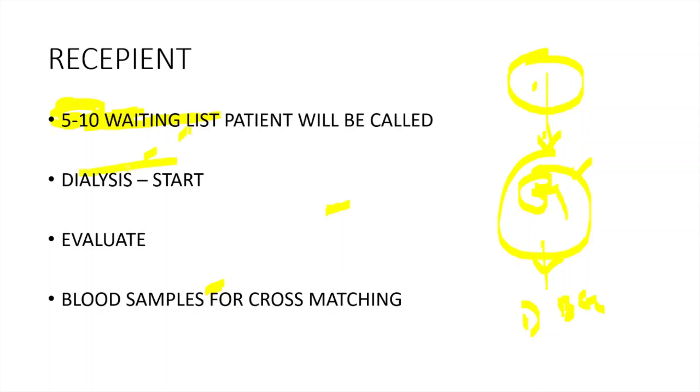For almost all of them, dialysis will be started simultaneously. Why dialysis? Because out of these patients, only one is going to get the kidney. Despite that, the rest are called because many times there will be one or another abnormality, so that patient might not be fit for surgery. That's why we call approximately five to ten patients.